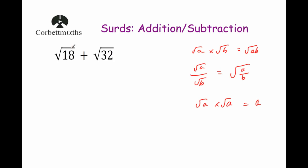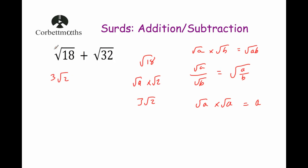You also need to know how to simplify surds. If I had Root 18, to simplify it I think of the biggest square number that is a factor of that number. The biggest square number that's a factor of 18 is 9, so Root 18 equals Root 9 times Root 2. The square root of 9 is 3, so that would be 3 Root 2. So instead of Root 18, I'm going to write 3 Root 2.